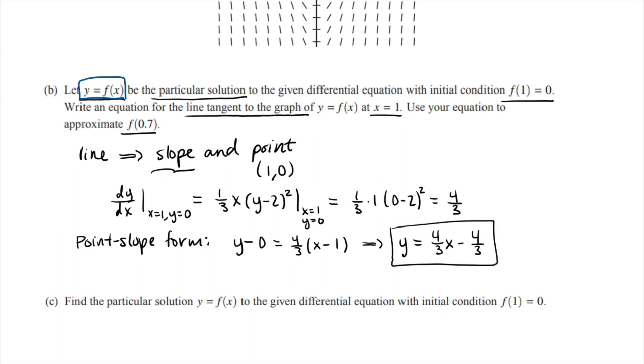So that's our tangent line at x equals 1. And then they want us to use that to approximate f(0.7). So this tangent line is an approximation for our function f. So we can say f(0.7) is approximately what we get when we plug in 0.7 for x here: 4/3 times 0.7 minus 4/3. And now, well, maybe I'll factor out that 4/3 again because I think that'll make it easier.